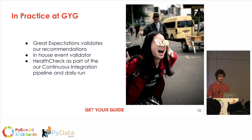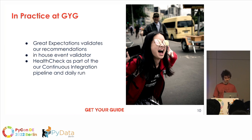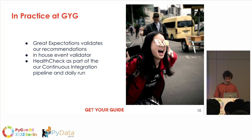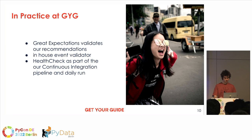We took action to make sure these kinds of things don't happen again. We now use Great Expectations to validate our recommendations before pushing them to production. We also introduced an in-house validator integrated with Datadog, which pushes metrics to Datadog and sends alerts if something goes wrong — used to validate our main pipeline events and output predictions. Recently, we also introduced health checks as part of our continuous integration pipeline, which also run daily during our prediction runs.